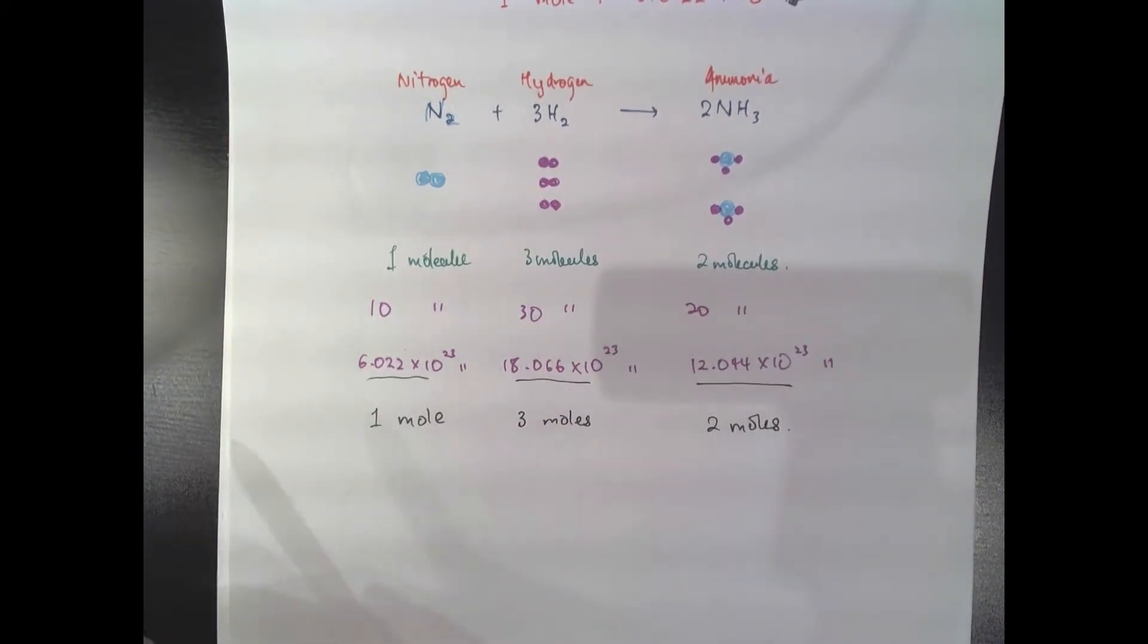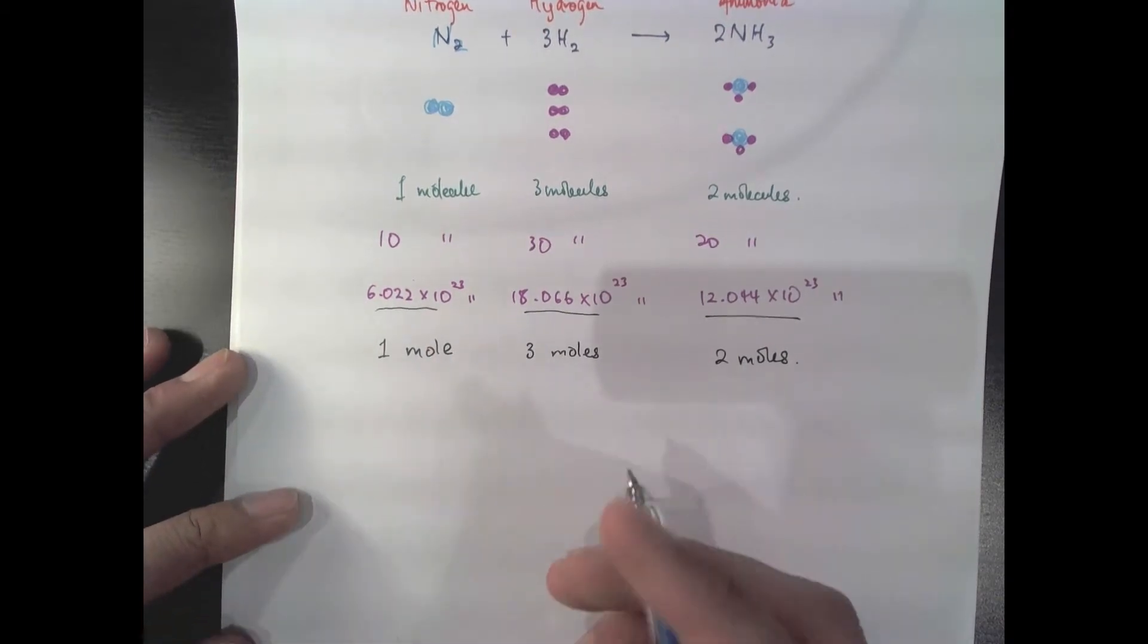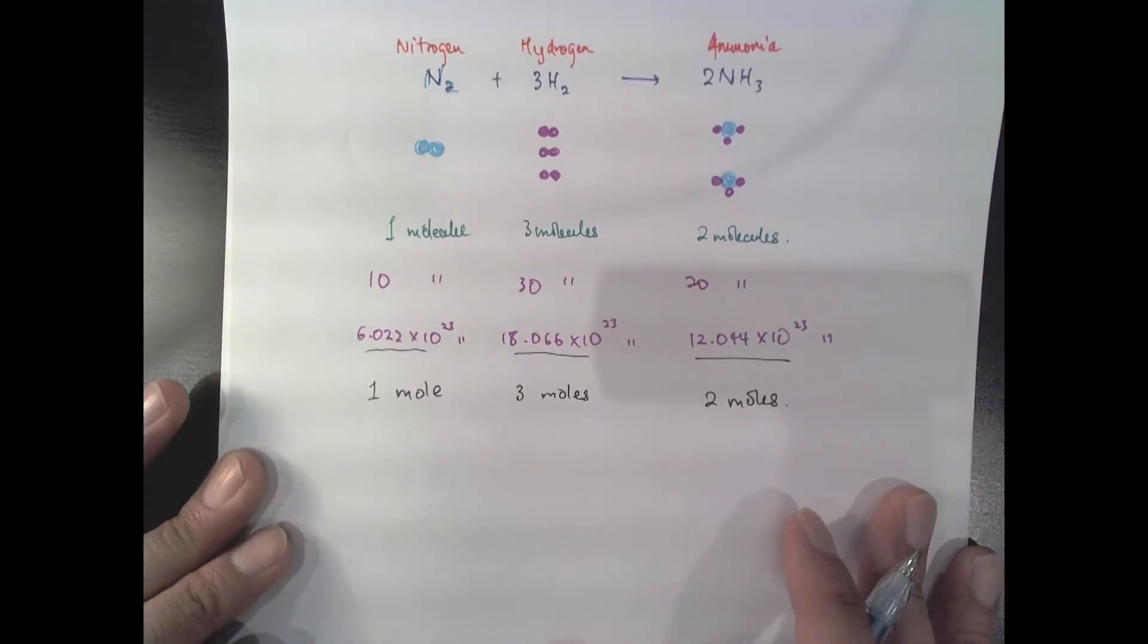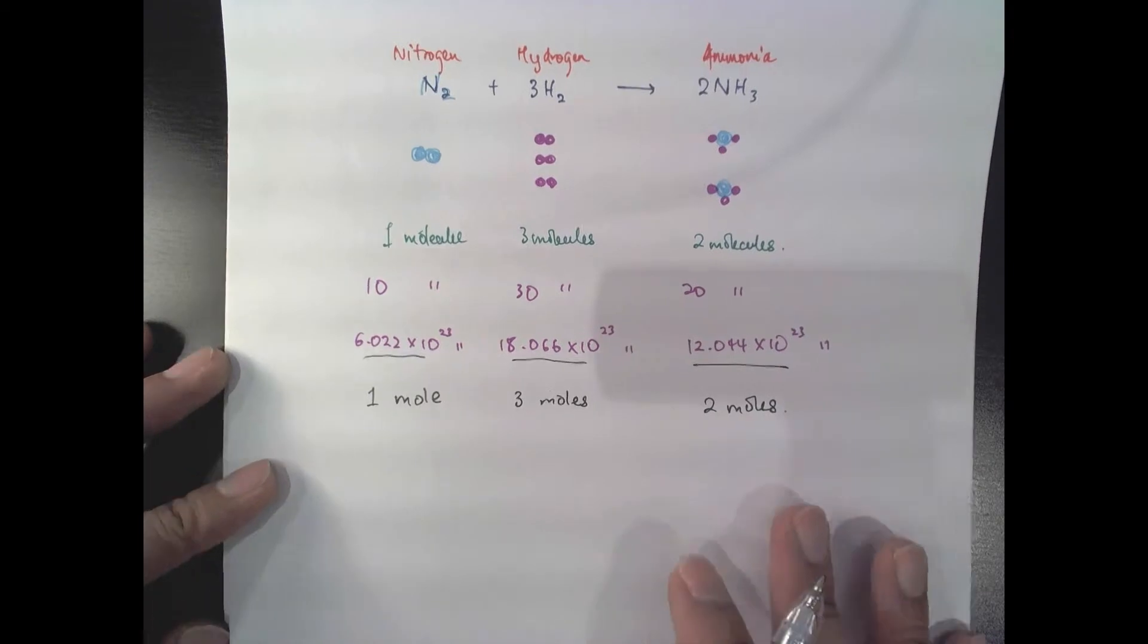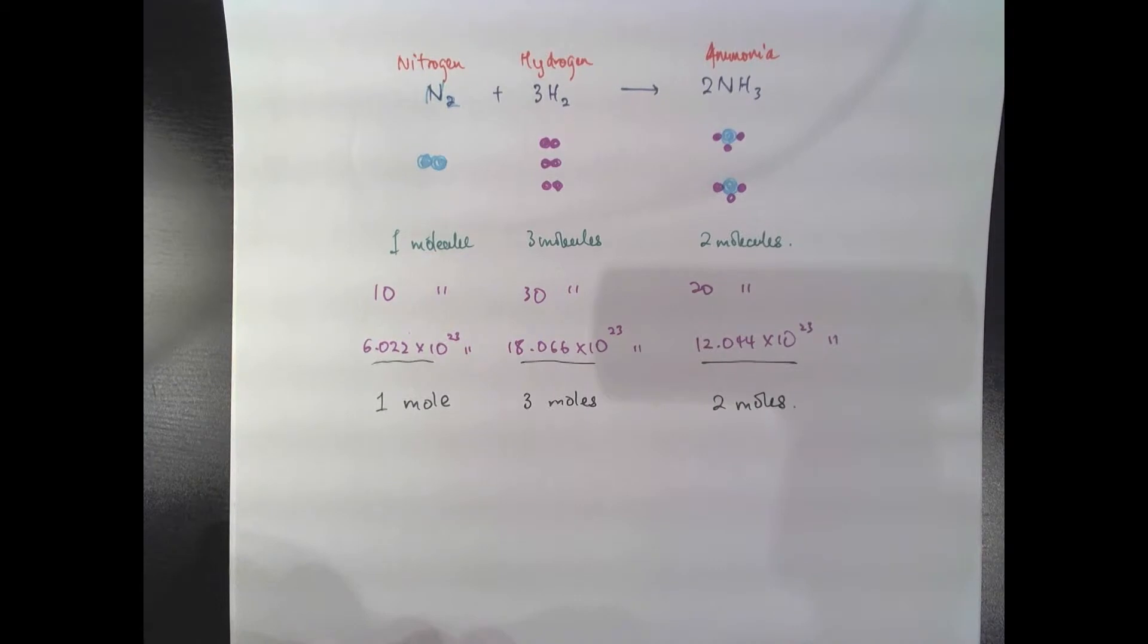I mean, we don't have an instrument that sensitive to be able to measure our reaction in terms of the number of molecules. So we need an appreciably large number of molecules or atoms to be able to measure things in grams using the weighing scales that we have in our labs, and hence number of moles.